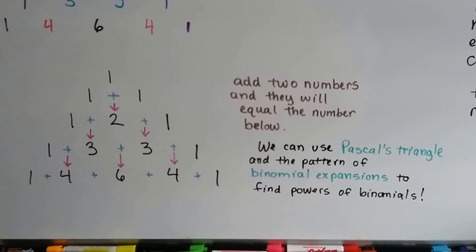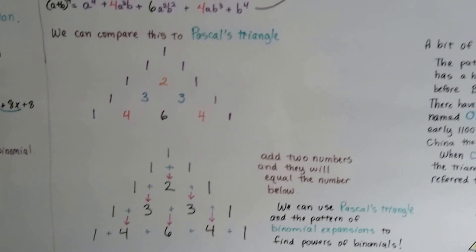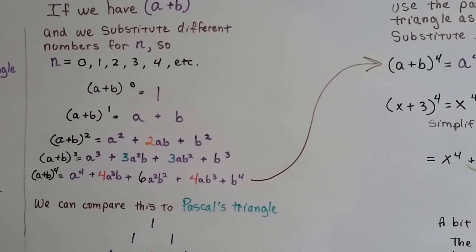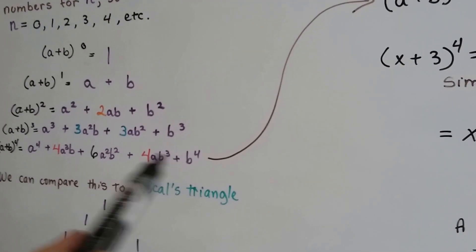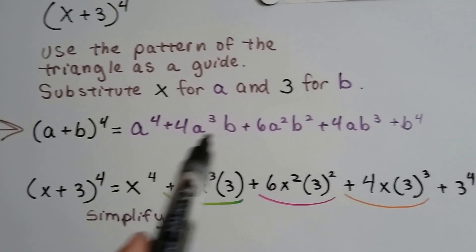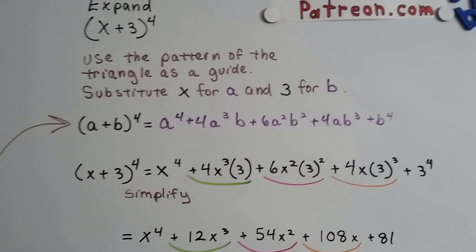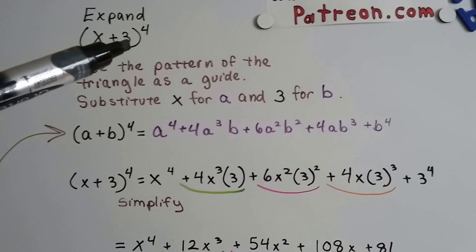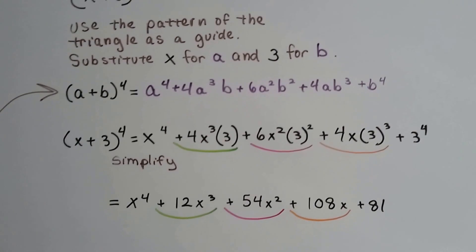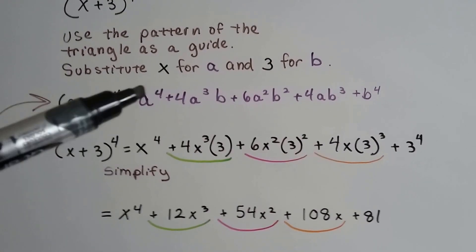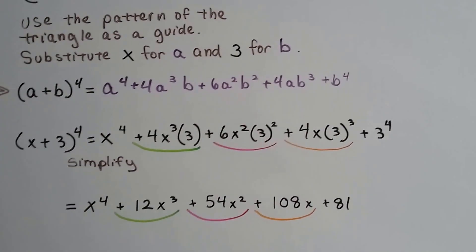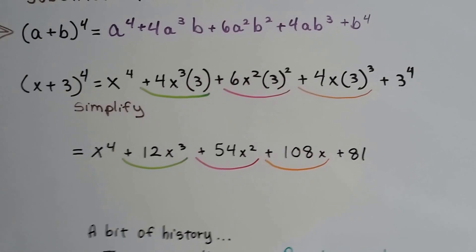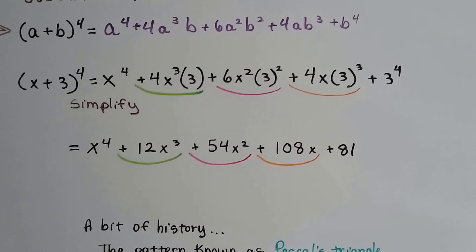So we can use Pascal's Triangle and the pattern of binomial expansions to find powers of binomials. It would be a lot easier to just know this triangle and be able to use it to expand binomials. So if we had to expand x plus 3 to the fourth, we know it's going to be a big long polynomial. But what if we just copied the a plus b to the fourth pattern? We use the pattern of the triangle as a guide — we substitute x for a and 3 for b and just copy it. When we simplify, we do our multiplication and combine like terms, and we get this nice polynomial.